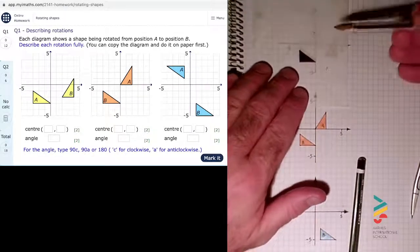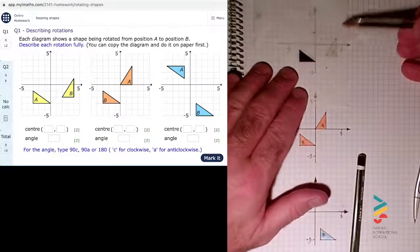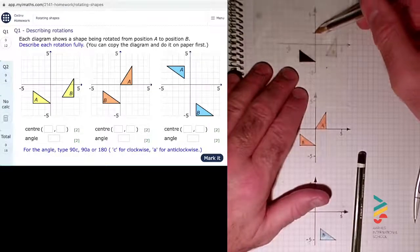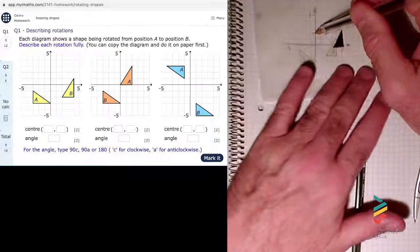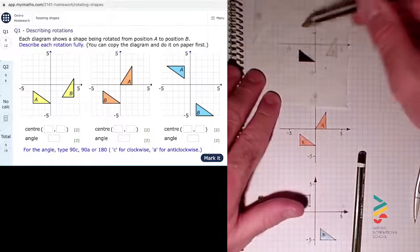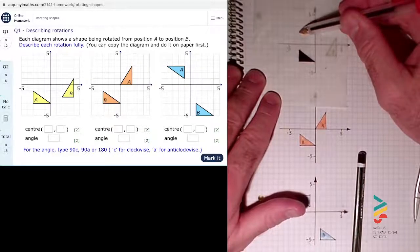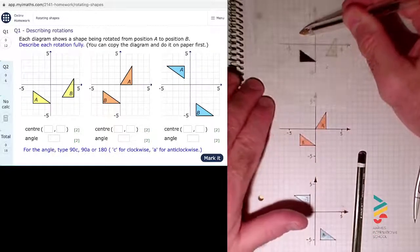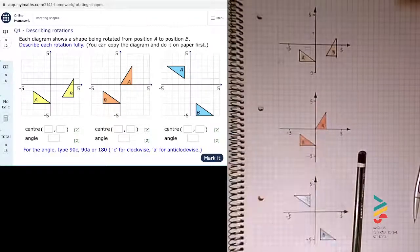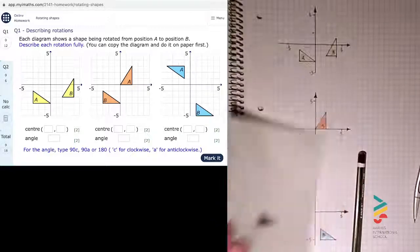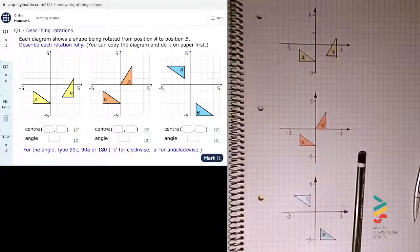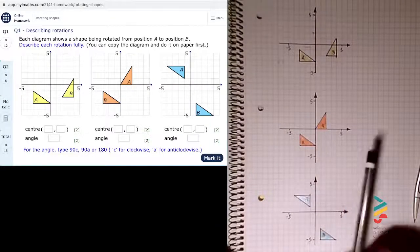I could of course just get a piece of tracing paper and stick a pin or pen at random places and try to get the shape to rotate to the same place. That's not particularly scientific. You know you get there in the end doing it that way, but I'm going to do it using geometrical constructions.